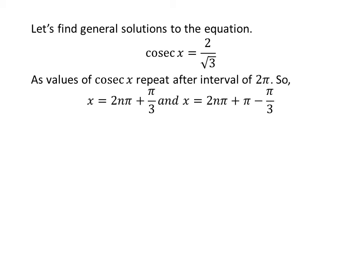Let us find the general solutions. As we know, the values of cosecant x repeat after the interval of 2π. So the general solutions are 2nπ plus π upon 3 and 2nπ plus π minus π upon 3, where n is an integer.